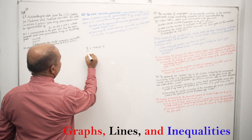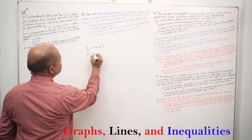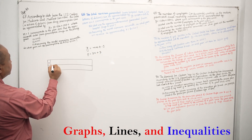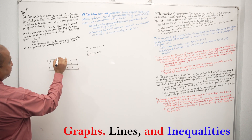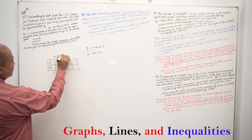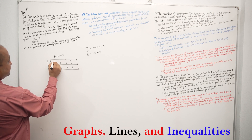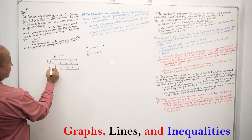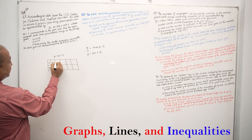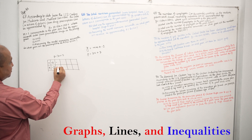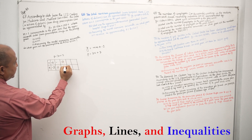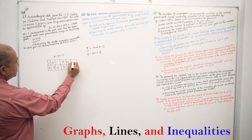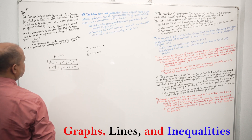I am going to write Y equals to 3X plus 3. I am going to write a table with X and Y values. When X equals minus 2, Y equals minus 6 plus 3, which means minus 3. When X equals minus 1, Y equals 0. When X equals 0, Y equals 3. When X equals 1, Y equals 6. When X equals 2, Y equals 9.